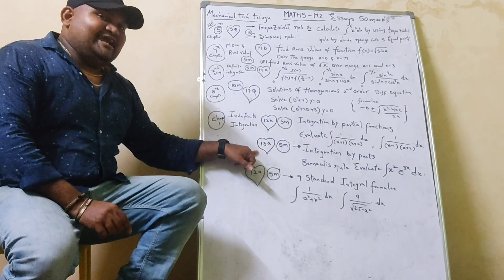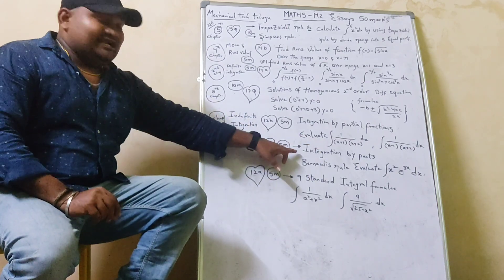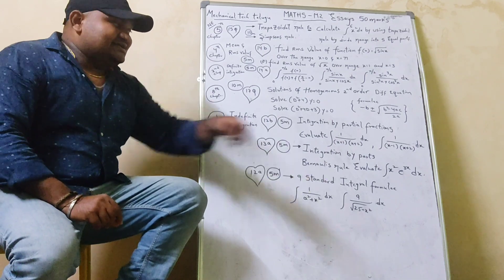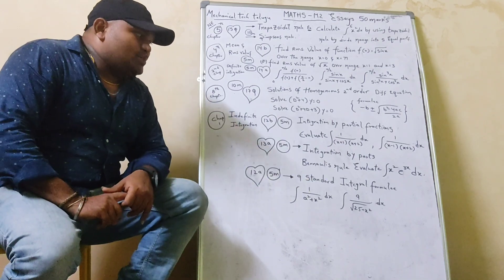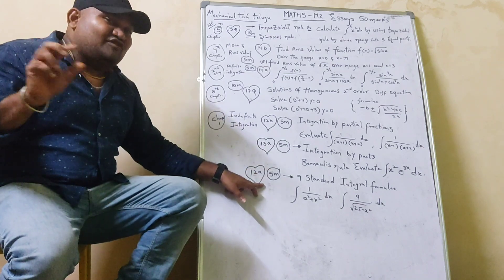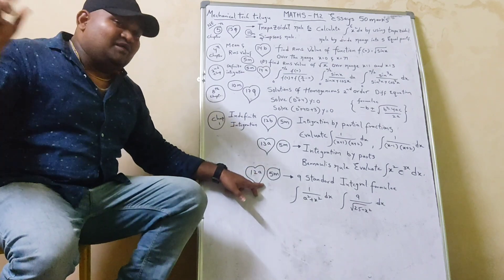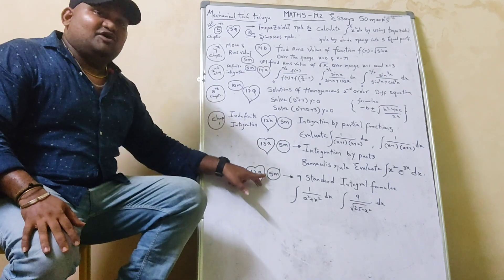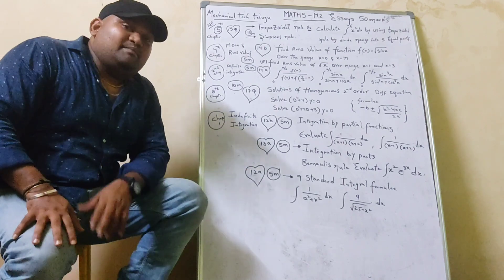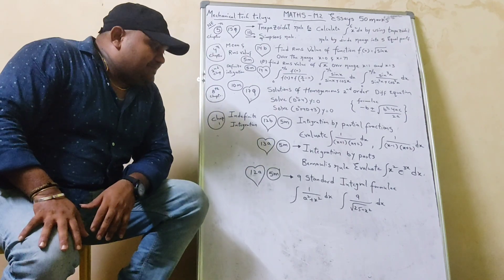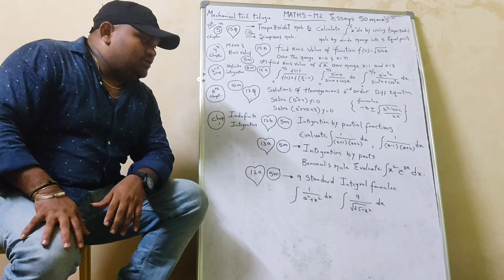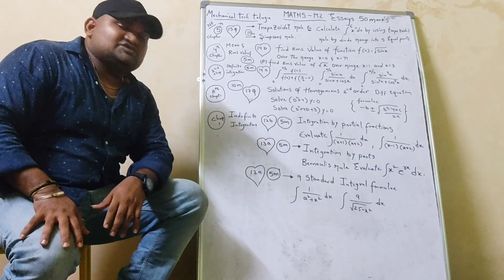Question 13a, 5 marks: integration by parts model. Evaluate: integral x squared e to the power of 3x dx. Next, 9th standard integration form — that model is a marks question, 12a. Evaluate: 1 by x squared plus x squared into dx. Evaluate: 1 by root of x squared into dx.